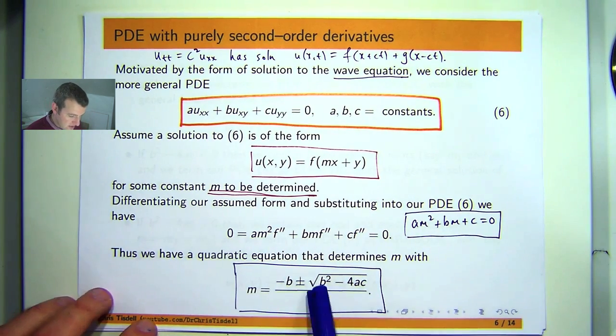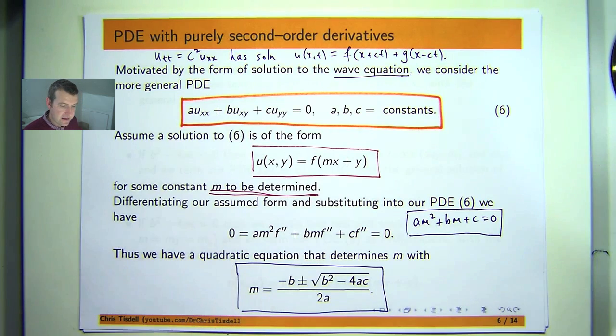So M will be the following. And depending on what this discriminant is, you'll either have two real and unequal roots, two real and unequal roots or two complex roots.